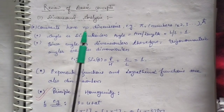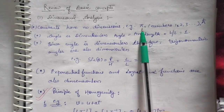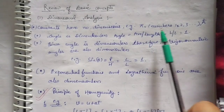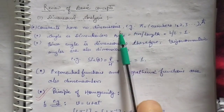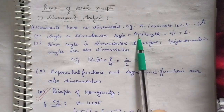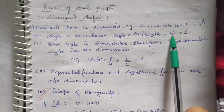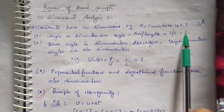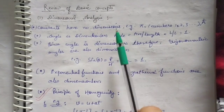The first point we are going to study is that constants have no dimension. For example, pi is a number whose value is 3.14, and since it is a number, all numbers or any constants are dimensionless quantities. Angle is also dimensionless because angle equals arc length upon length — both are L, so L cancels and we are left with 1, which is a number. That's why angle is also dimensionless.